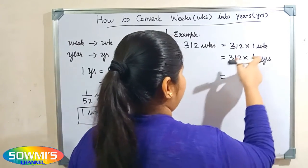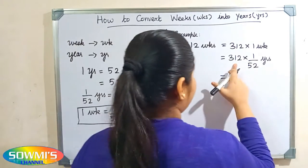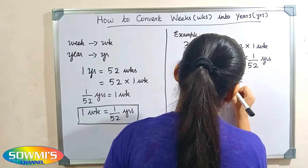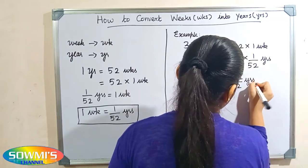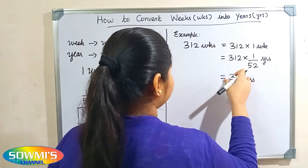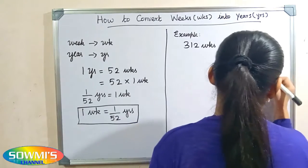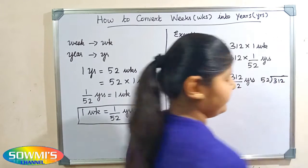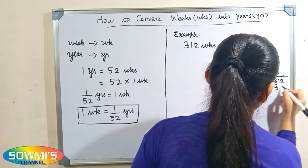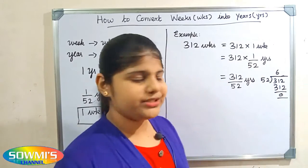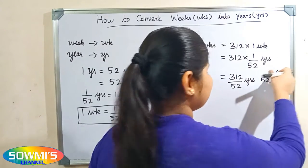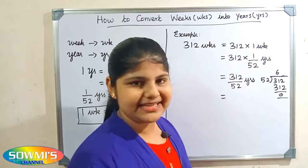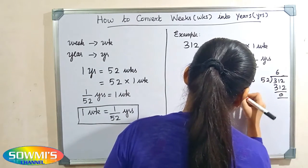So 312 multiply 1 by 52 years. 312 multiply 1 will be 312, so we get 312 by 52 years. Now we divide 312 by 52: 52 sixes are 312, so the quotient is 6. When we divide 312 by 52, our answer will be 6 years.